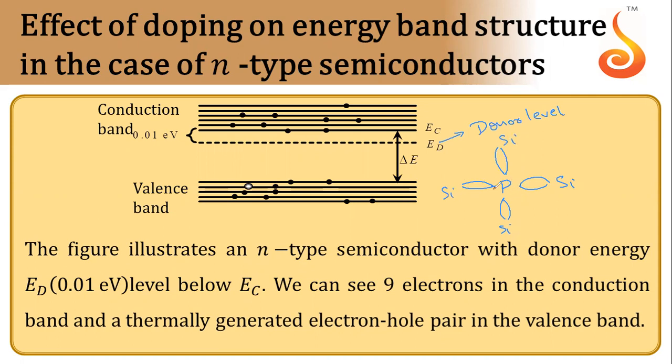This impurity has five valence electrons. Four of those valence electrons form bonds with silicon atoms, and one is very loosely bound to the nucleus. When small amount of energy is applied, since it is loosely bound to the nucleus, its energy will be higher and close to the conduction band. When small amount of energy or heat is applied, it will move from here to conduction band.